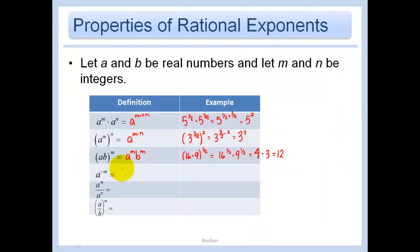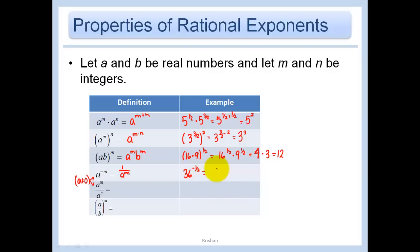a to the negative m is just 1 over a to the m power — and a does not equal 0 since we have a's in the denominator. So 36 to the negative 1 half is just 1 over 36 to the 1 half. And 36 to the 1 half is just 6, because 6 times 6 is 36.